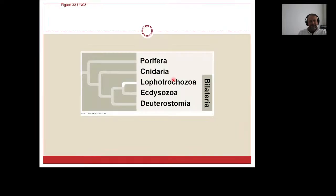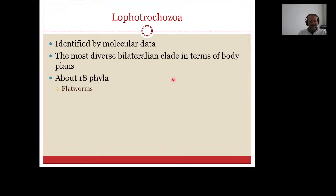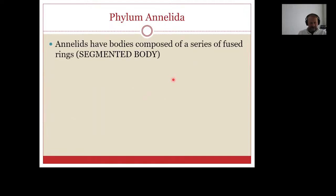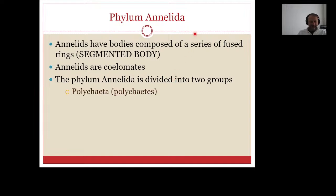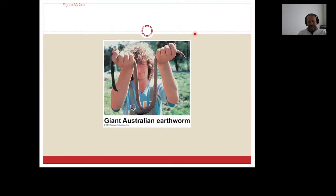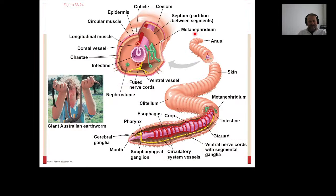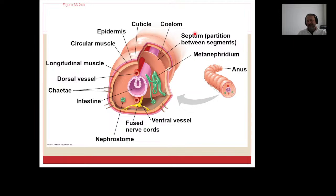The first group is Lophotrochozoa — we will pass through this quickly just to have an idea. Example animals in this group are annelids, phylum Annelida. They have a segmented body; annelids are coelomates. Phylum Annelida is divided into two groups: polychaetes and oligochaetes. An example is the earthworm. Note that you are only responsible for what I cover in lecture — I will also send you the lecture notes.